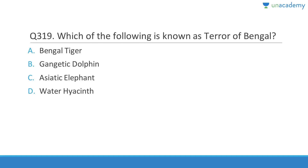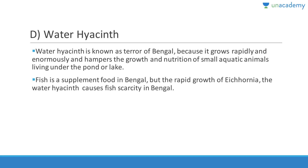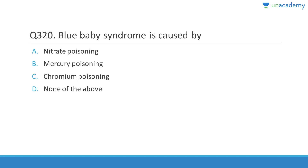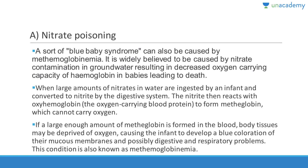Question 319: The 'Terror of Bengal' is the water hyacinth (Eichhornia crassipes). It is called so because it grows rapidly and enormously, hampering the growth and nutrition of small aquatic animals, completely covering ponds and lakes, and even causing fish scarcity in Bengal. Question 320: Blue baby syndrome (methemoglobinemia) is caused by nitrate poisoning, where hemoglobin is replaced by methemoglobin, depriving body tissue of oxygen — caused by nitrate contamination in groundwater.